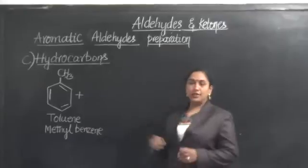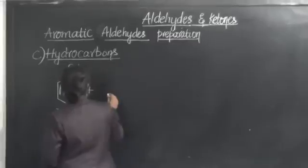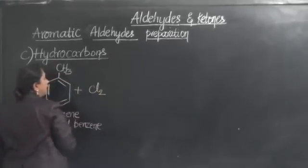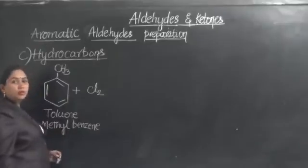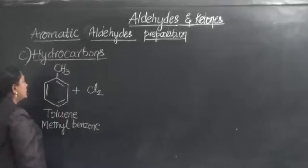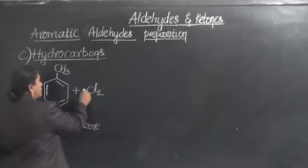Let us take the same toluene as our starting material. The process we are going to carry out is the side chain halogenation. We are going to carry out the process of halogenation of the side chain, subjecting toluene into the process of chlorination.